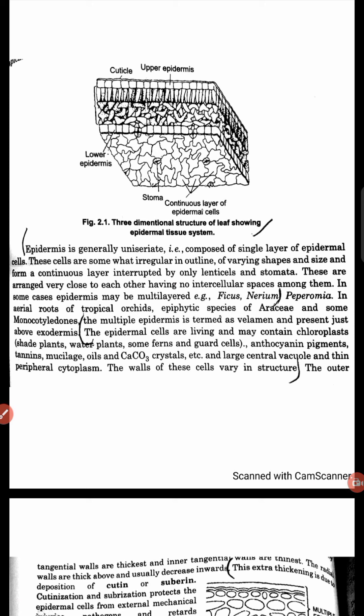Generally, epidermis is uniseriate, meaning there is only a single layer of cells. But sometimes, in some cases like in Nerium, there are multiple layers of cells. When it is uniseriate, the cells are irregular in outline, shape, and size, and form continuous layers interrupted only by lenticels and stomata. Sometimes it is so closely arranged that there are no intercellular spaces.